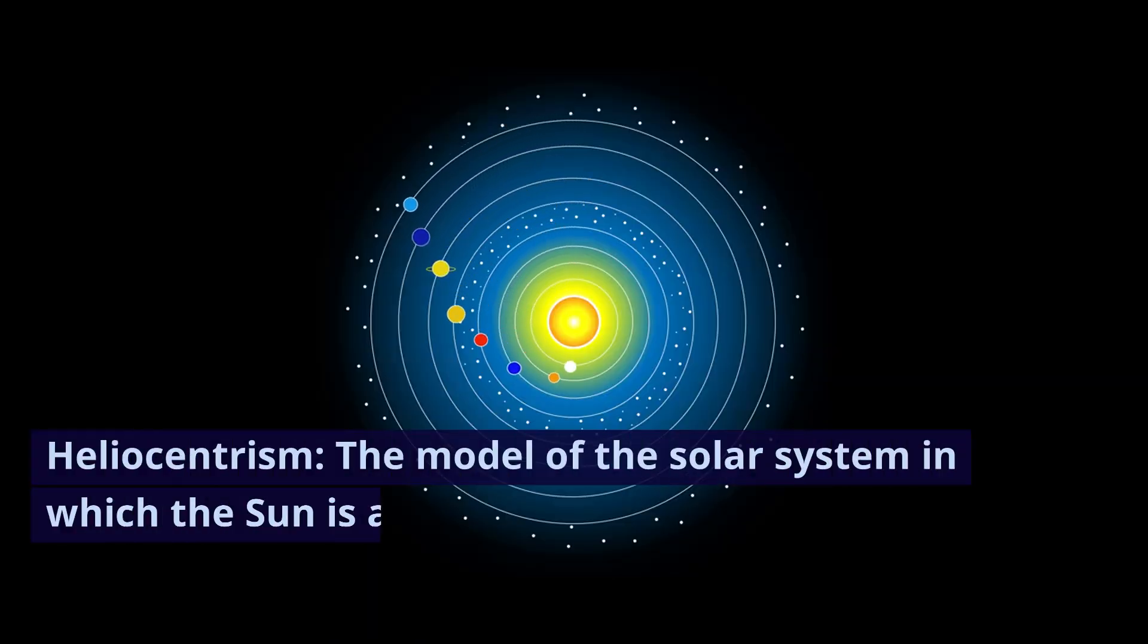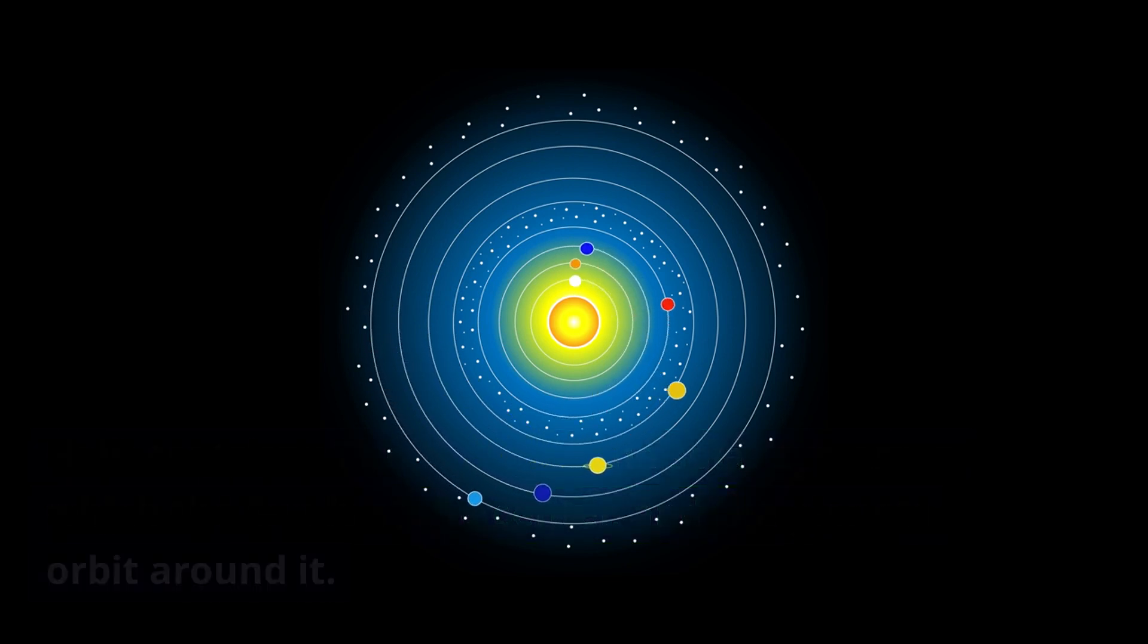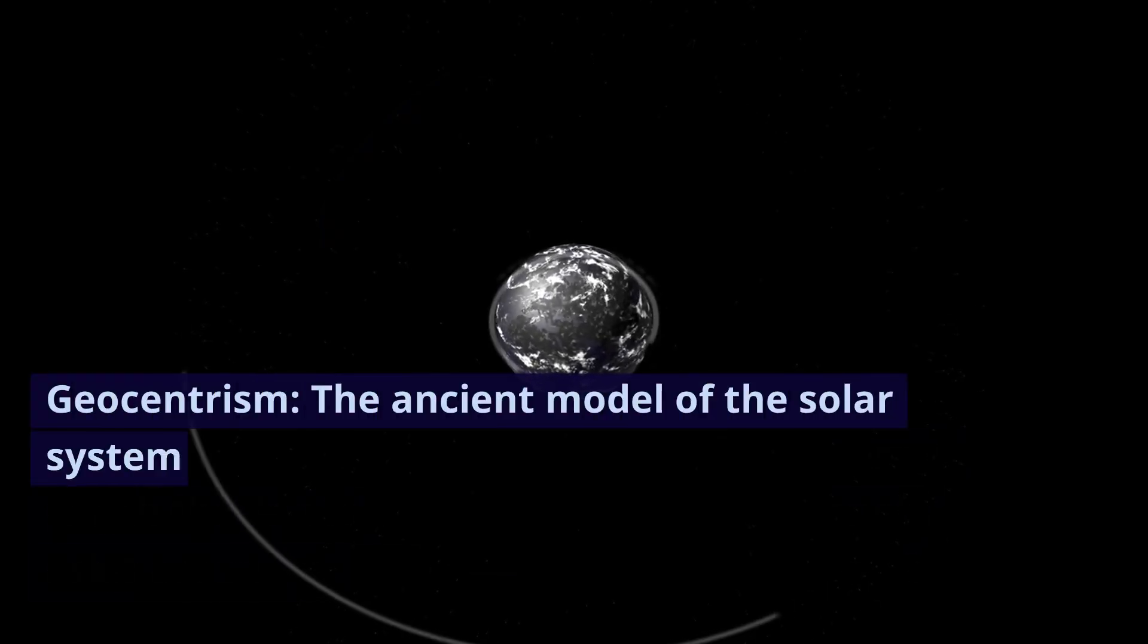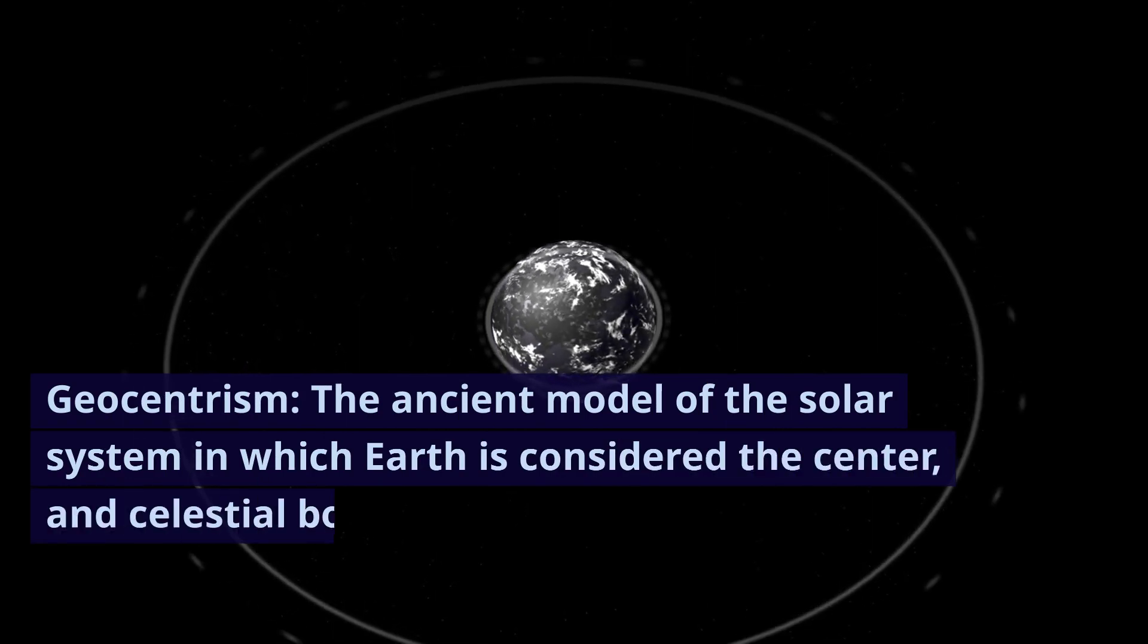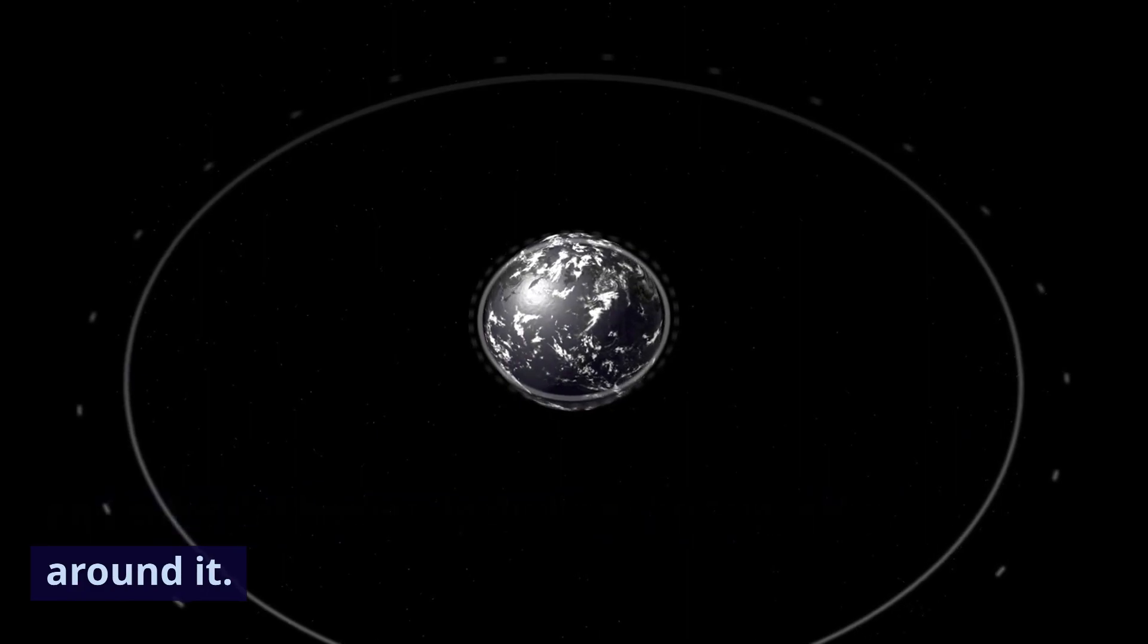Heliocentrism. The model of the solar system in which the Sun is at the center and the planets orbit around it. Geocentrism. The ancient model of the solar system in which Earth is considered the center and celestial bodies, including the Sun, orbit around it.